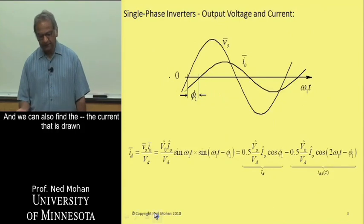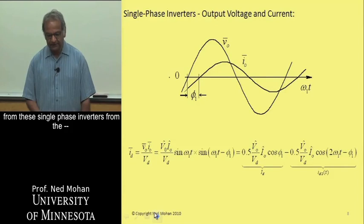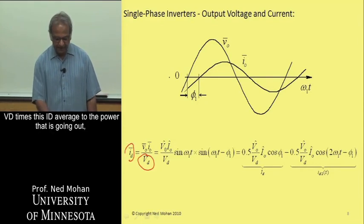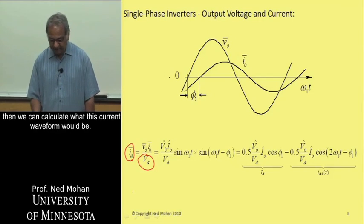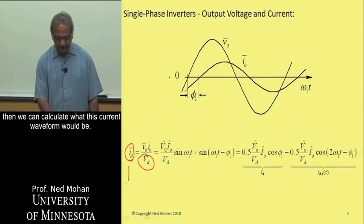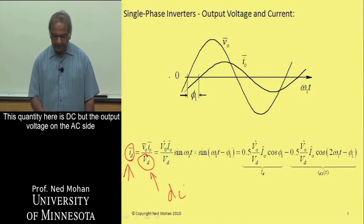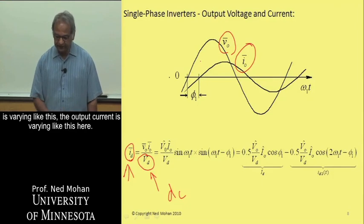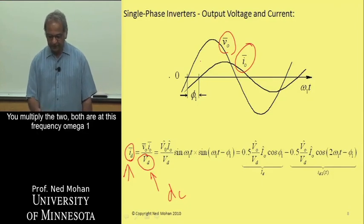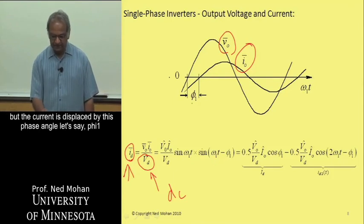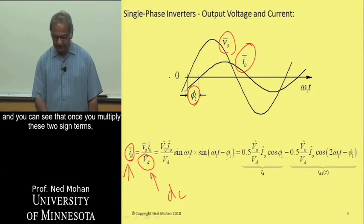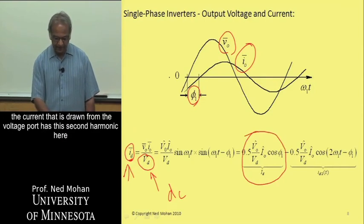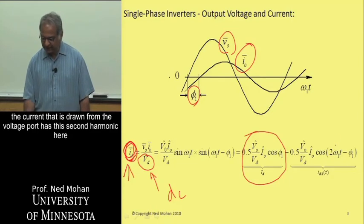And we can also find the current that is drawn from these single-phase inverters from the voltage port. If we equate the power coming in, Vd times this Id average to the power that is going out, then we can calculate what this current waveform would be. This quantity here is DC. But the output voltage on the AC side is varying like this. The output current is varying like this here. You multiply the two. Both are at this frequency, omega 1. But the current is displaced by this phase angle phi 1. And you can see that once you multiply these two sine terms, we have this quantity, which is a DC quantity. But in addition, the current that is drawn from the voltage port has this second harmonic here.